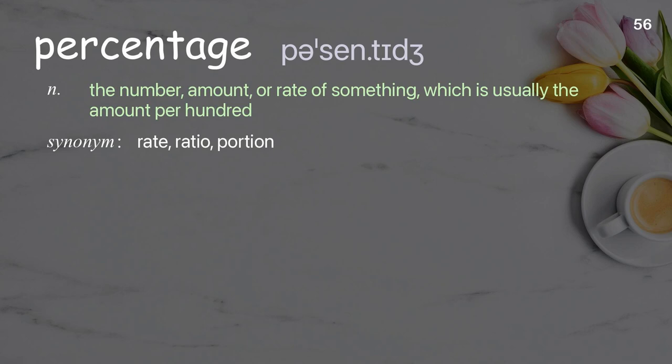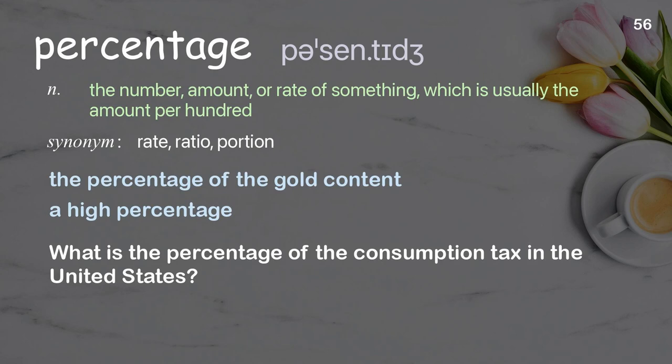Percentage: the number, amount, or rate of something, which is usually the amount per hundred. Examples: the percentage of the gold content, a high percentage. What is the percentage of the consumption tax in the United States?